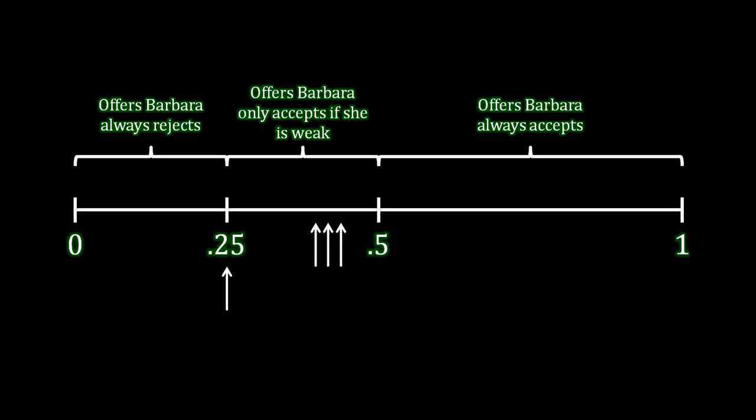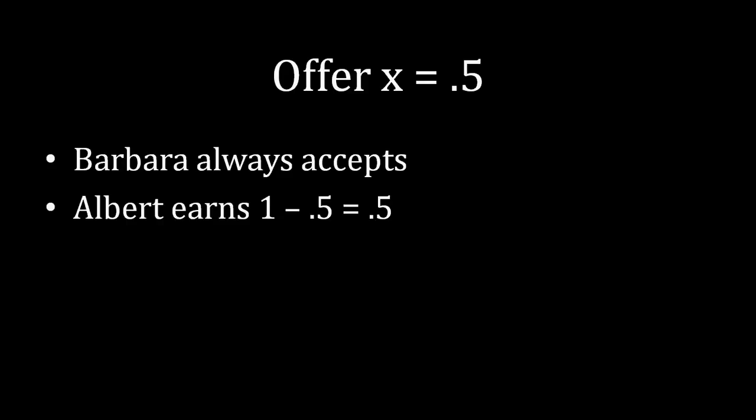To recap: we started with infinitely many offers and have narrowed it down to just two possibilities — Albert offers either 0.5 or 0.25. Which one is it? We can figure this out quickly by comparing payoffs. If Albert offers 0.5, both types accept — the strong type and the weak type — so there's no need to calculate expectations. Albert receives the remainder: 1 − 0.5 = 0.5. So if Albert offers 0.5, he receives 0.5 for certain.